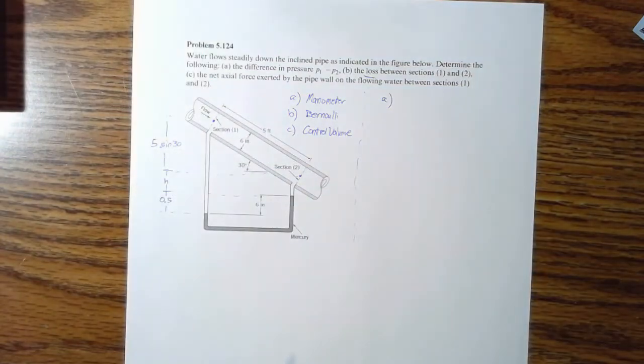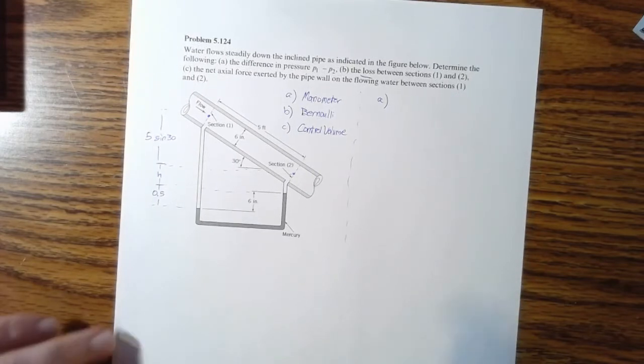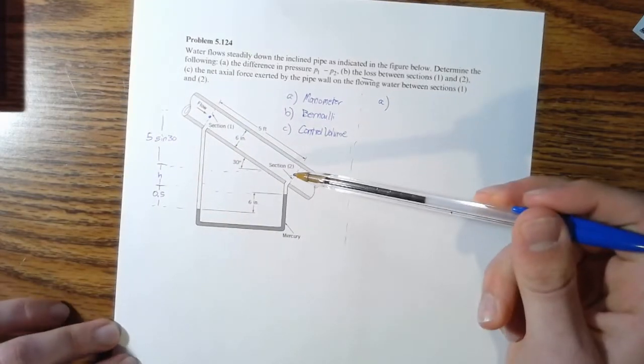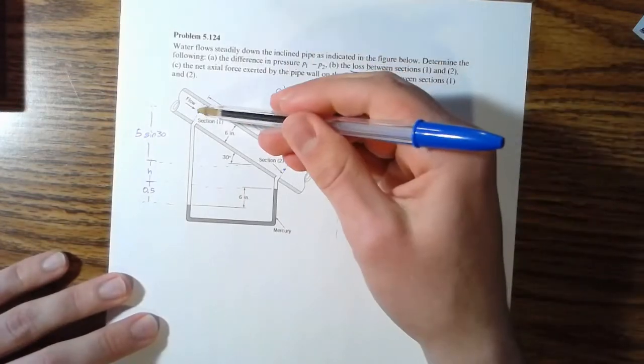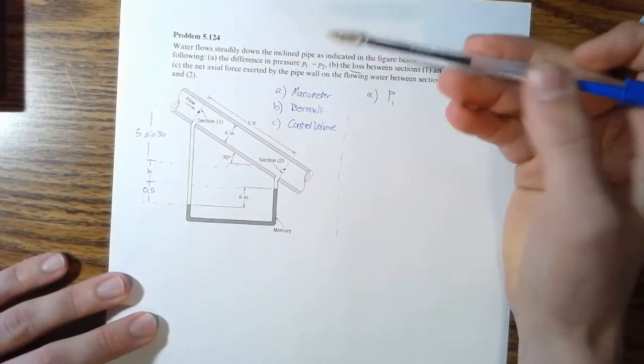We're just going to call that H and then we're given between here and here is 0.5 feet. I'm going to go ahead and just convert that now. So similar to what we did yesterday, we're just going to start at one point and then work our way to the other point. So point here that we start at, that's going to be just pressure one.